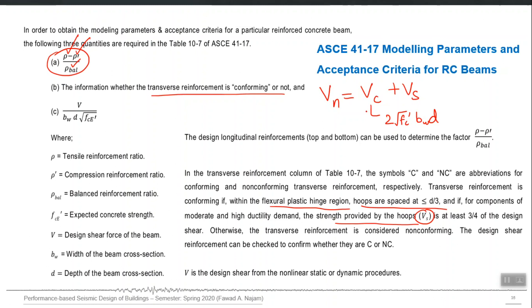Vc is two times the square root of fc prime Bwd, and there is a more detailed expression now in the new ACI. But Vc is the shear capacity contributed by concrete, and Vs is the capacity provided by steel. If the Vs is at least 3 by 4 of the design shear, which means that the contribution of steel is around 75 percent towards the total design shear, then we call it conforming. If any of these two conditions are not fulfilled, we call it non-conforming.